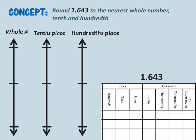Moving on to our concept with decimals, we are going to round 1 and 643 thousandths to the nearest whole number, tenth, and hundredth. Just like in our previous problem, first we are going to strategically decompose our number. Since we are first rounding to the nearest whole number, we will write our number in our place value chart: we have one one, six tenths, four hundredths, and three thousandths.